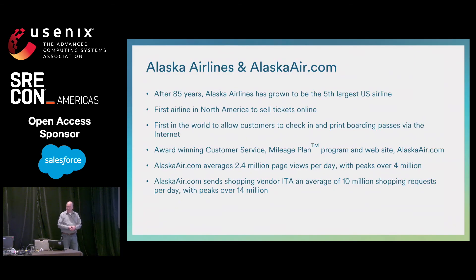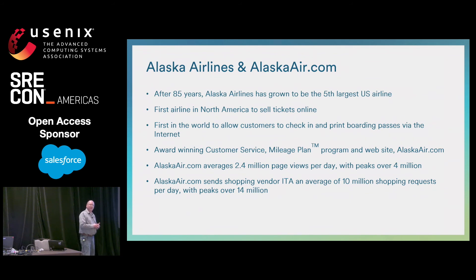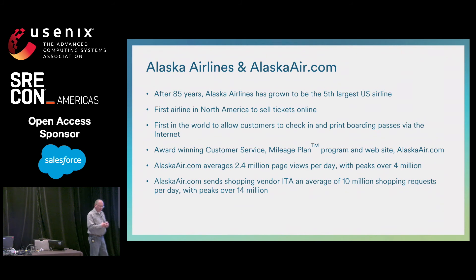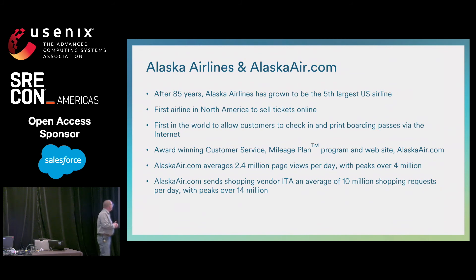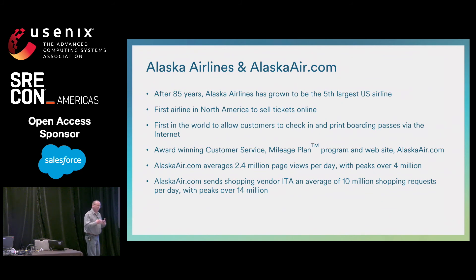As a brief introduction to Alaska Airlines and AlaskaAir.com — a lot of you, if you live on the East Coast, might not know about us — but we're 85 years old and we are now the fifth largest airline in the U.S. We pride ourselves on a number of firsts: we were the first North American airline to sell tickets online, and the first in the world to allow people to check in and print boarding passes online. We have award-winning customer service, a great loyalty program, and an award-winning website, AlaskaAir.com, which is our primary e-commerce website where we sell airline tickets for Alaska.